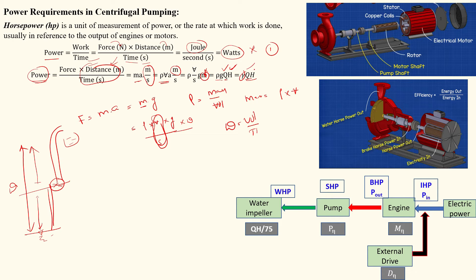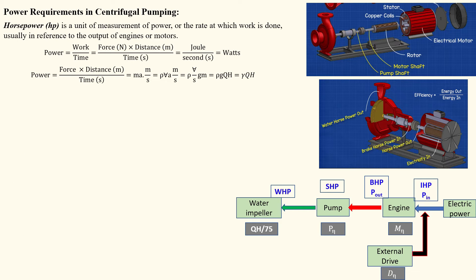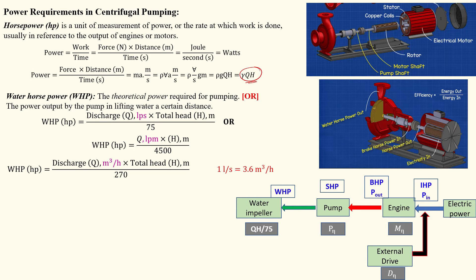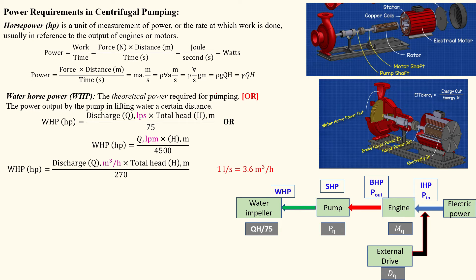Since density into gravity equals specific weight, power can be written in terms of discharge and head. This is the power acting on the water — the water horsepower. The critical power required for pumping is the power needed to lift water from a lower elevation to a higher elevation. In SI units, power is expressed in watts.